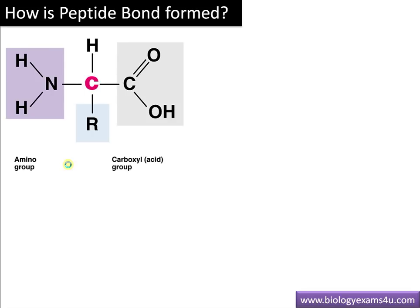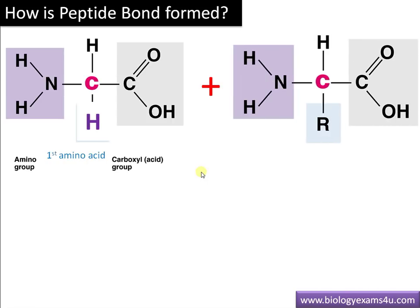Amino acids are the constituents of protein. An amino acid has a central carbon, then an amino group (NH2 group) and a carboxyl group (COOH group), then a hydrogen atom, and an R group — the R group differs for different amino acids. Let's take the simplest amino acid, glycine, where the R group is a hydrogen atom.